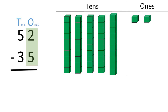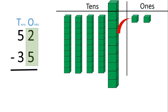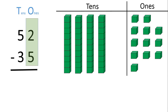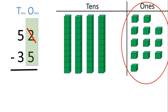So what we do is, we take 1 tens block and move it to the ones place by breaking it up into 10 ones blocks: 1, 2, 3, 4, 5, 6, 7, 8, 9, 10. So instead of 2 ones blocks, we now have 12 ones blocks. Strike away the 2 here and write down 12. Now we can begin subtraction.